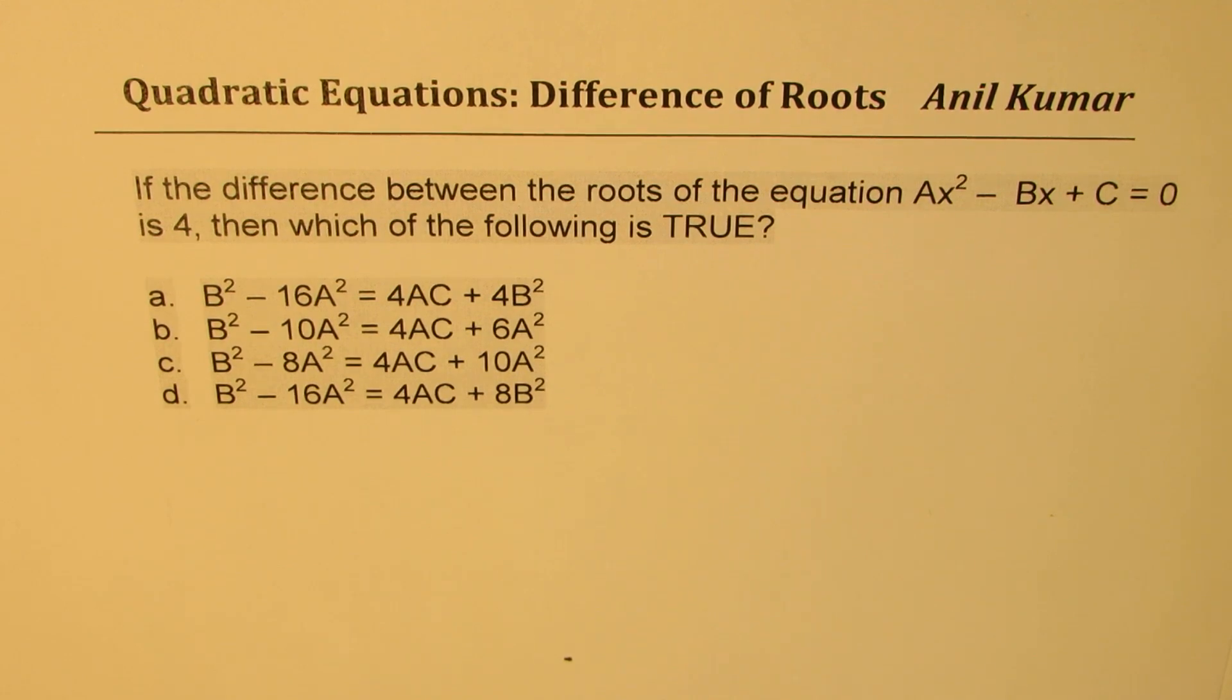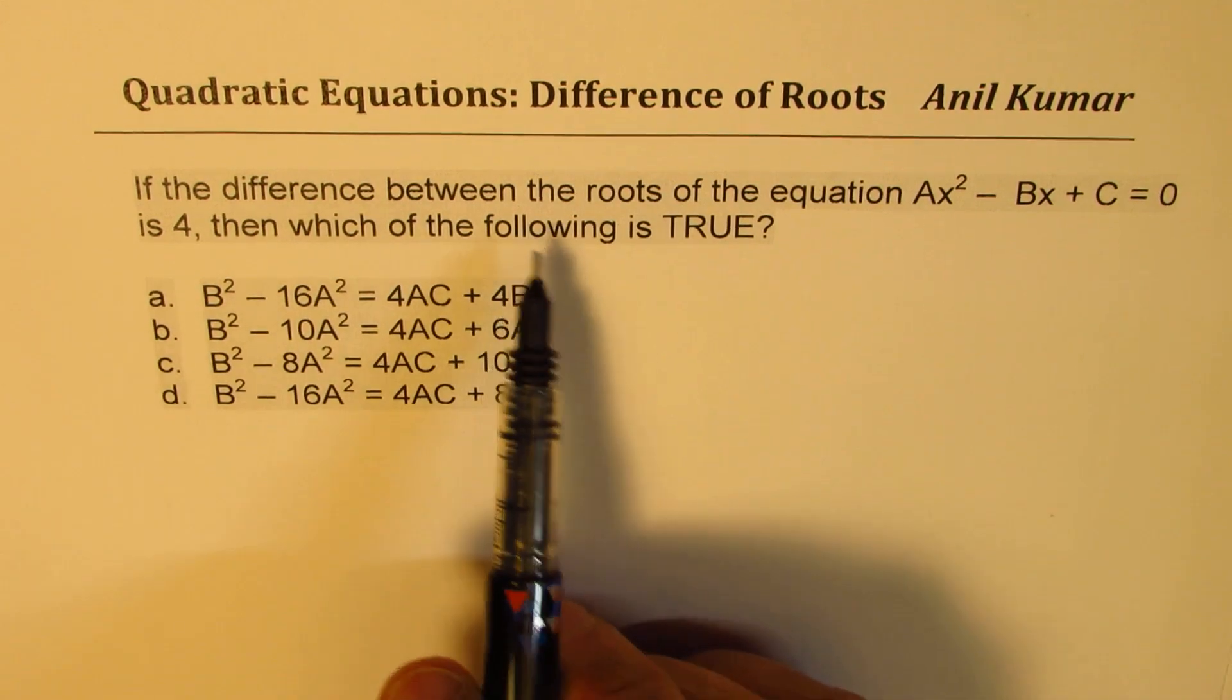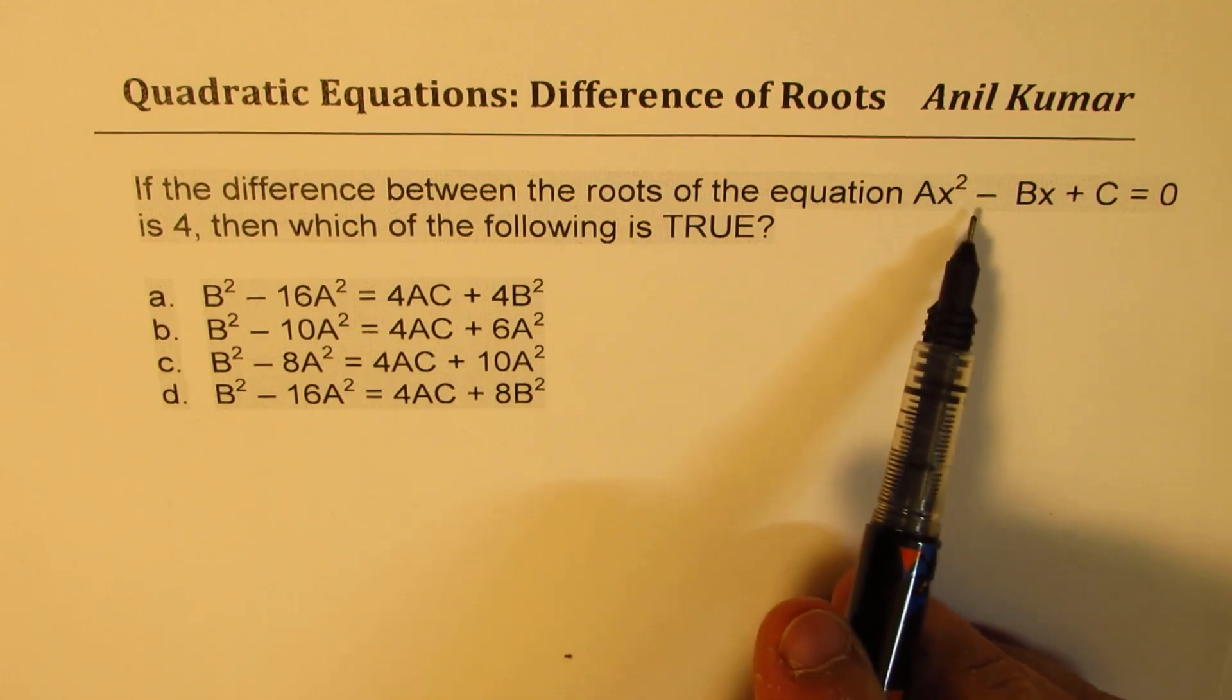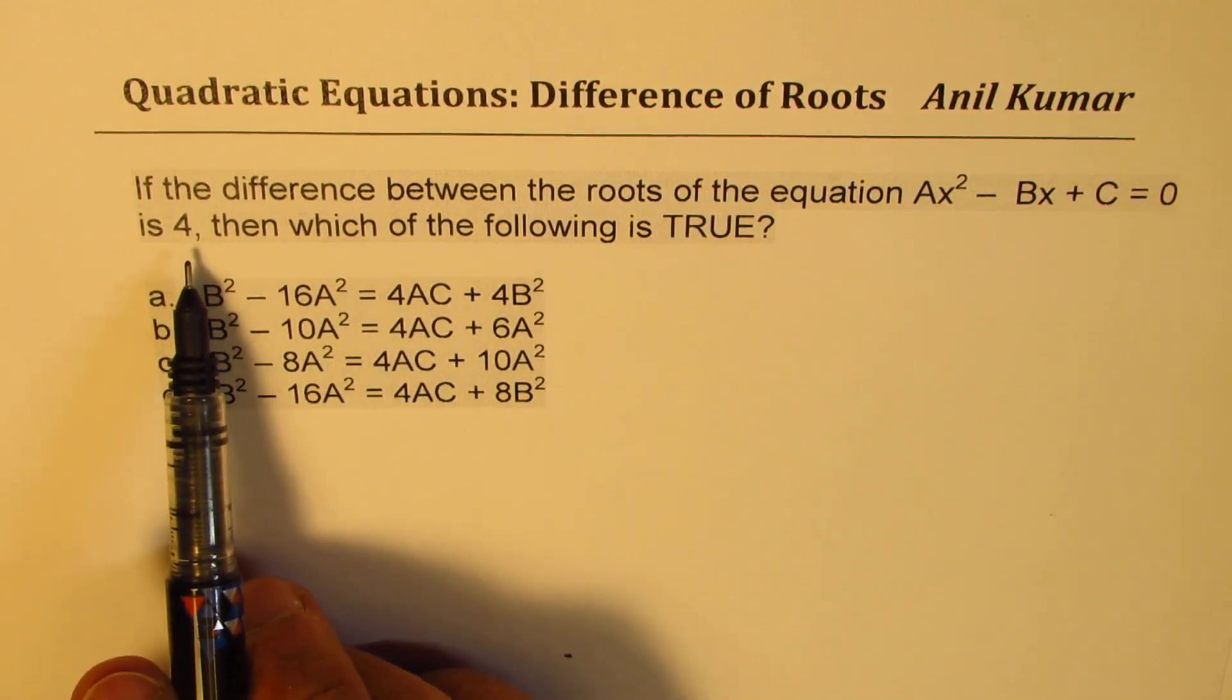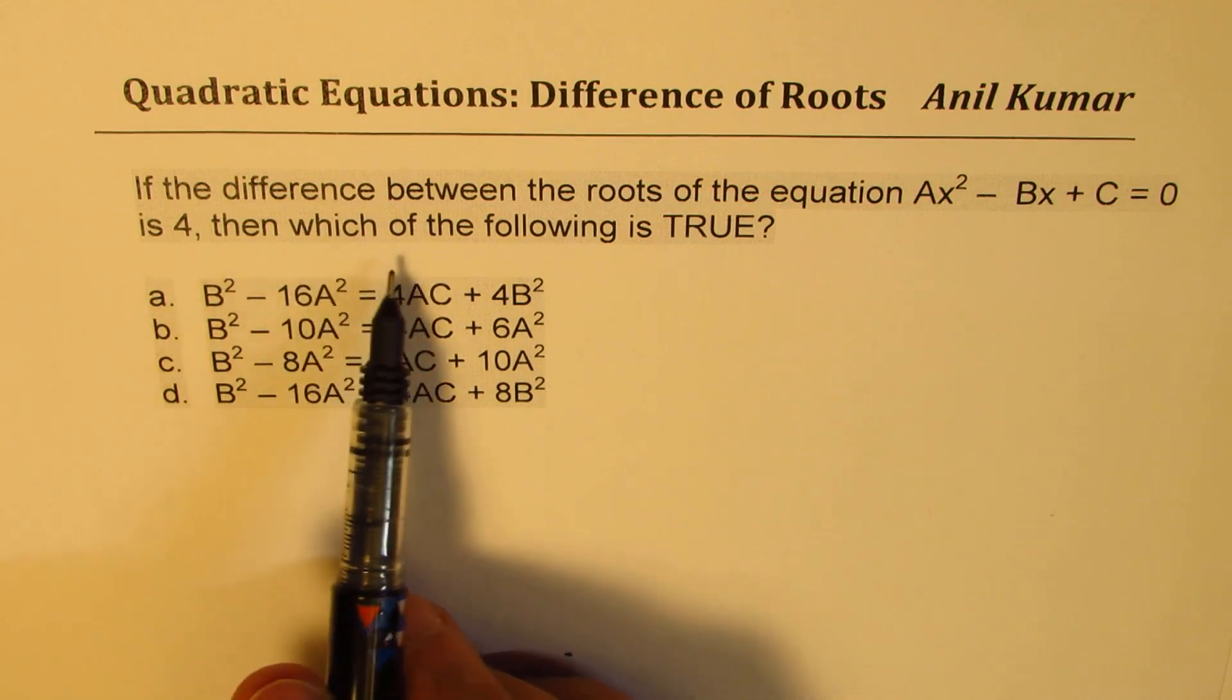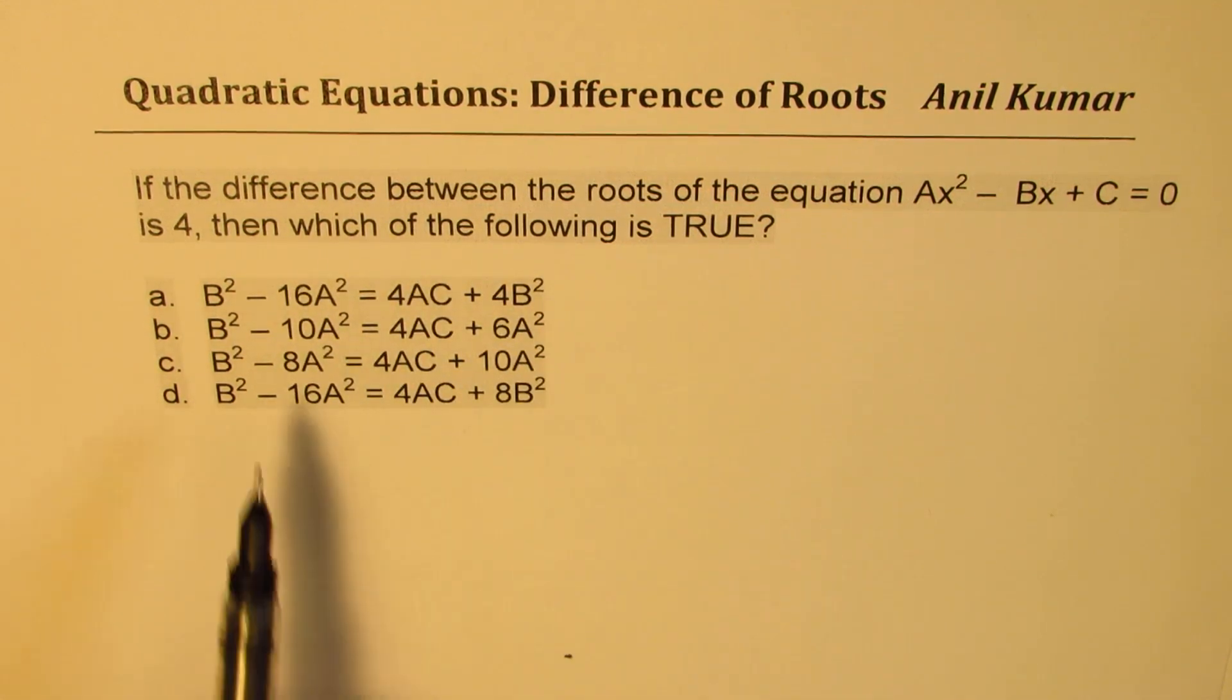The question here is: if the difference between the roots of equation ax² - bx + c = 0 is four, then which of the following is true? We are given four different conditions.